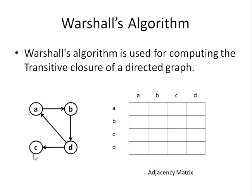We'll convert this graph into a computer-readable format called the adjacency matrix. The adjacency matrix is an N×N matrix where N is the number of vertices. Since we have four vertices, our rows and columns will be named after the vertices, giving us a 4×4 matrix. In this matrix, we represent connections using 0s and 1s since this is an unweighted graph. If there is an edge, we represent it as 1; if there is no edge, we represent it as 0.